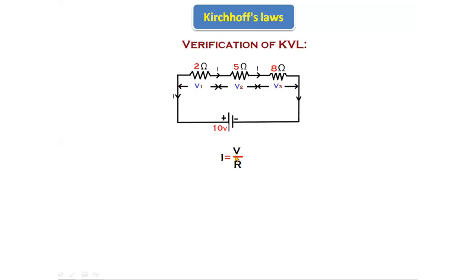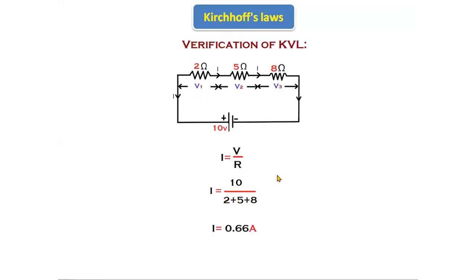I equals V by R. V we know is 10 volts. We need to find the total resistance R. Since all resistors are connected in series — 2 ohm, 5 ohm, 8 ohm — total resistance is 2 plus 5 plus 8. So I equals 10 divided by 15. If we calculate, we get I equals 0.66 amperes. That is the total current.